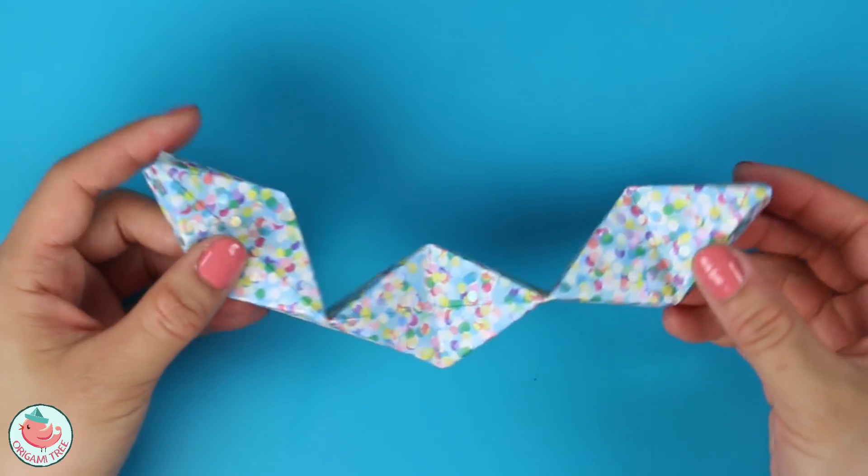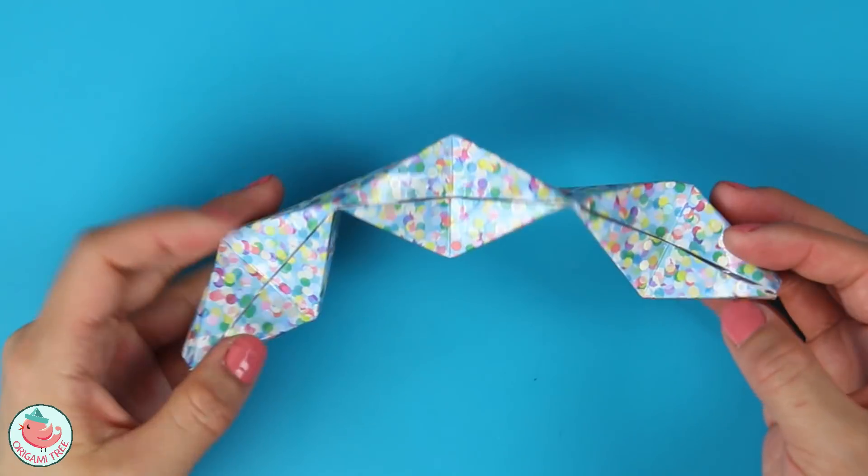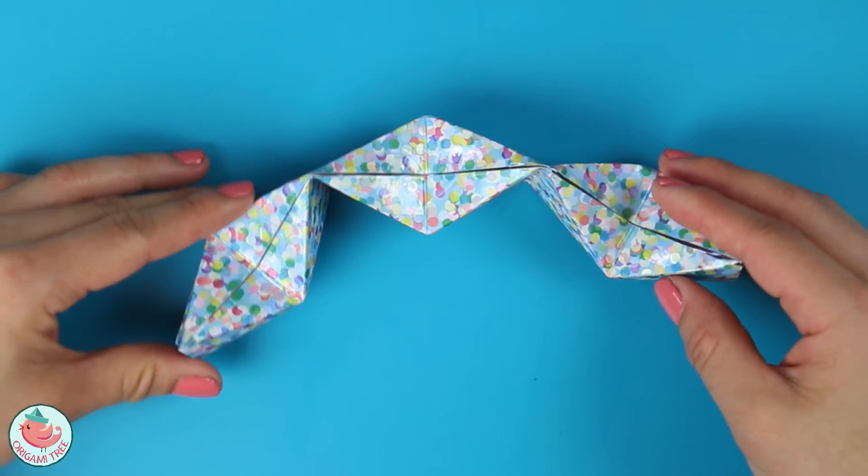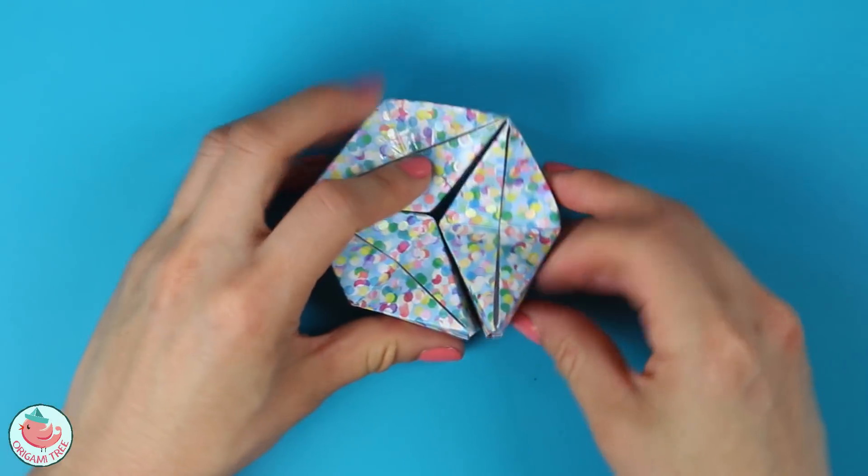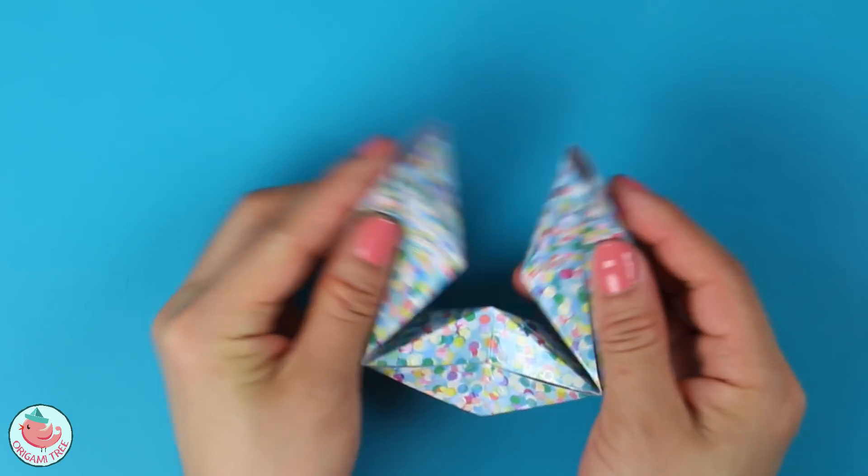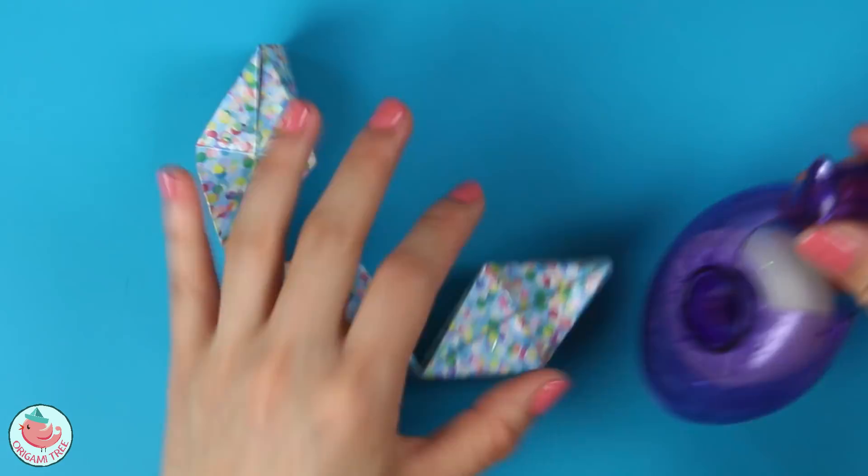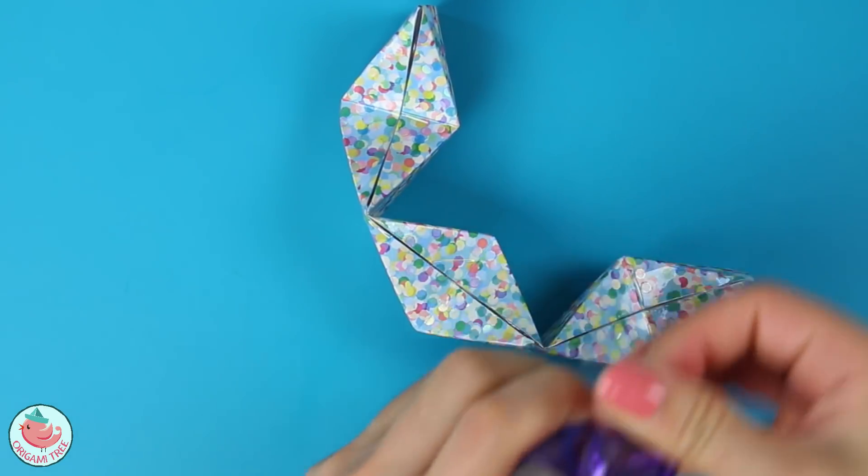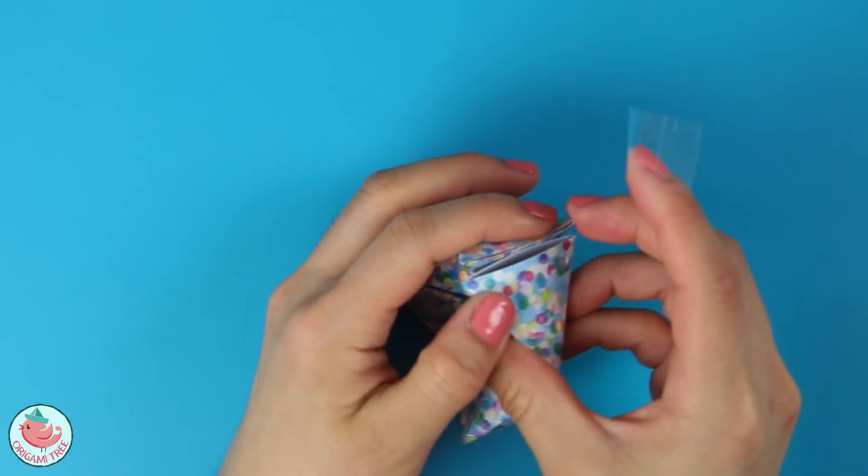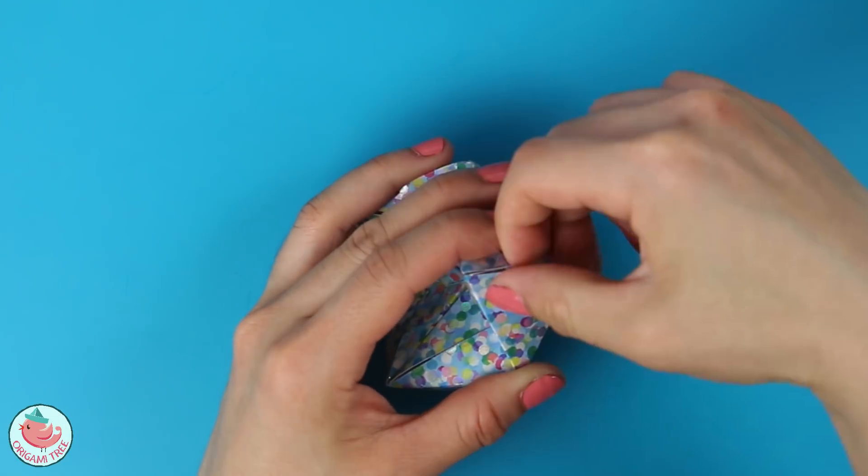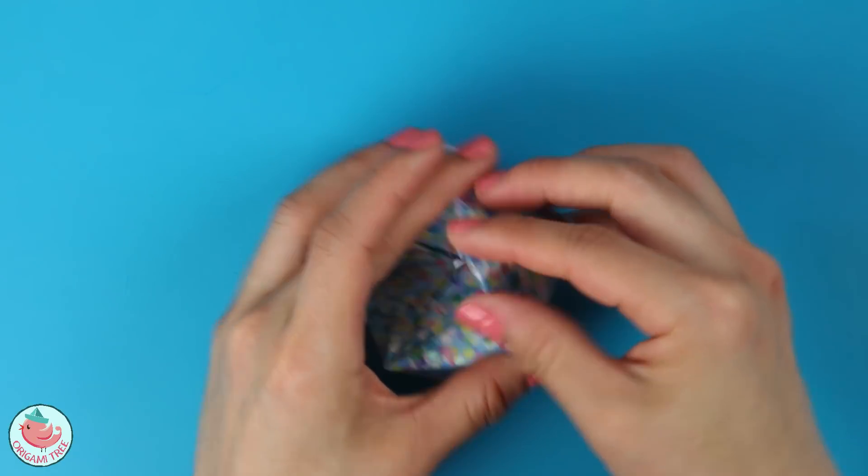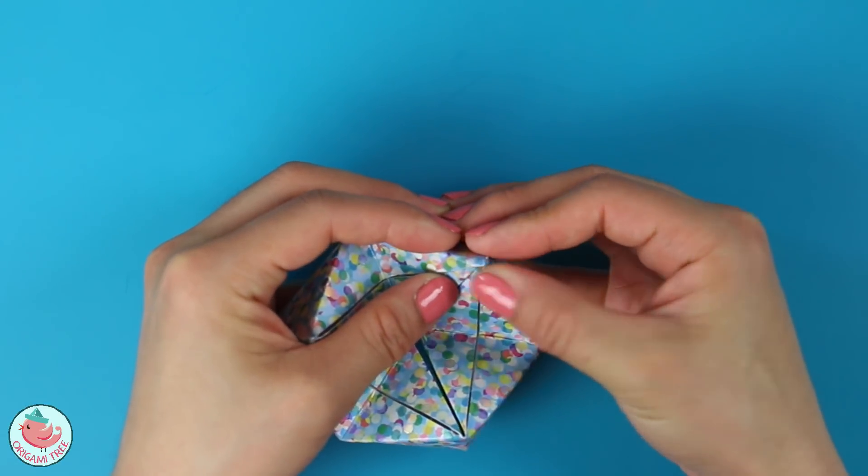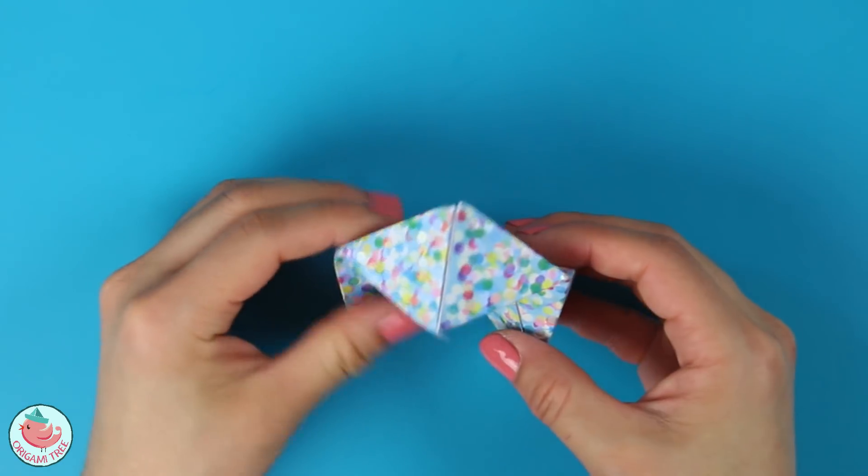So now we have this little loopy thing that kind of looks like a snake. And now the next step is to put everything together. So we're going to close it up and we're going to tape these two loose ends. Let's take some of our tape and do that right here. So now it's sealed.